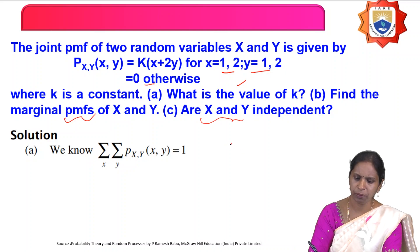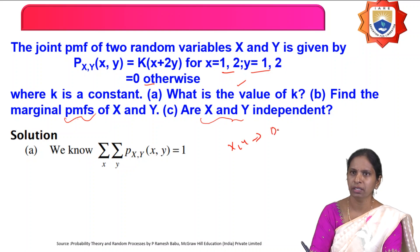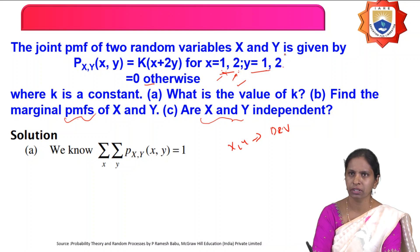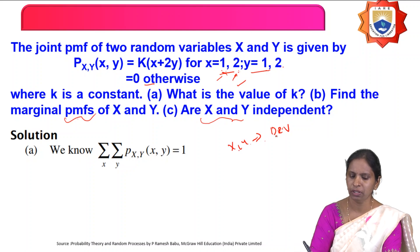X and y are discrete random variables because x takes only the values 1 and 2, and y also takes only two values. They are countable, finite values. Therefore x and y are discrete random variables.